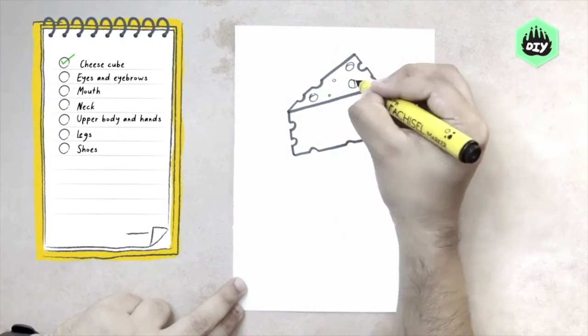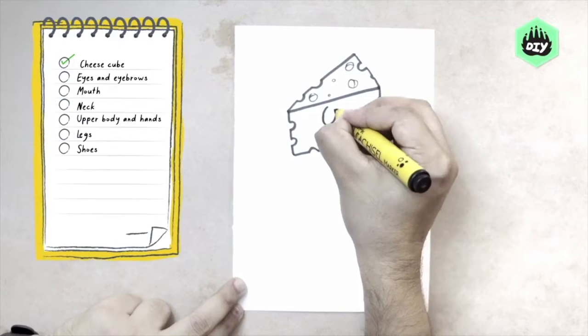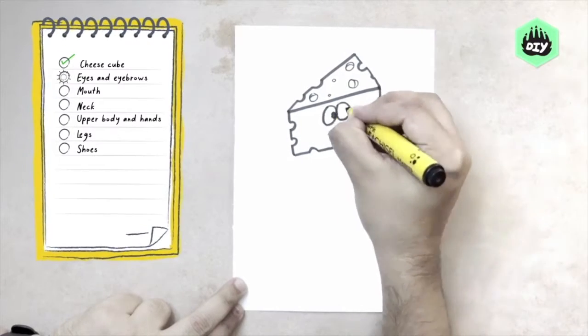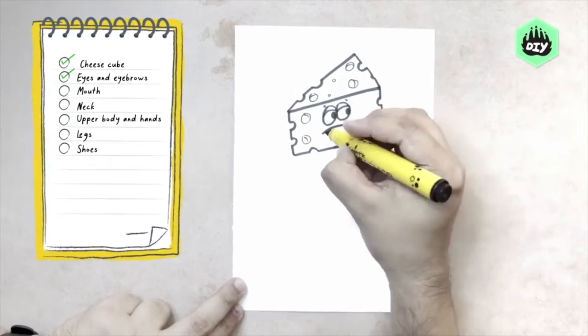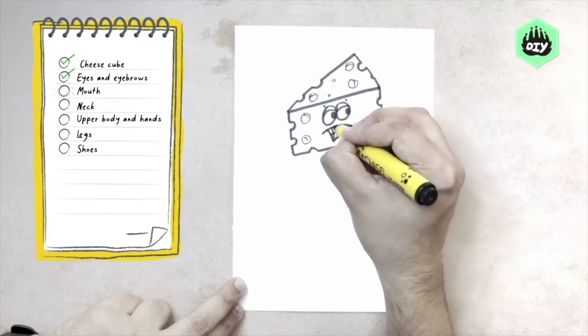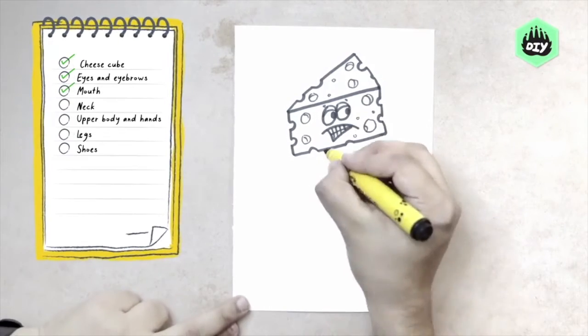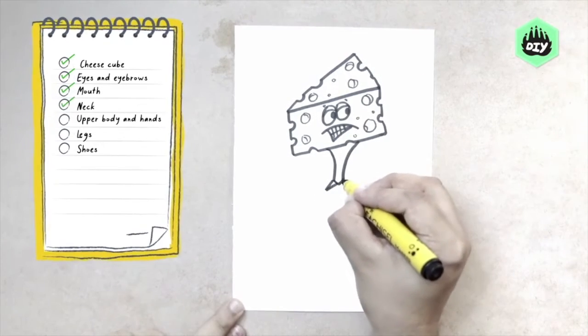We personify this inanimate object by making eyes and an expression. The mouth is open. Teeth are visible. We make a long neck, collar, and a couple of buttons.